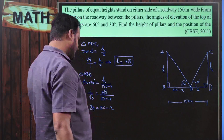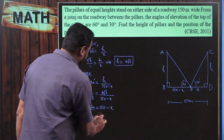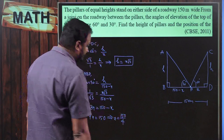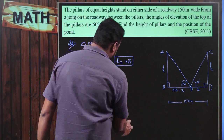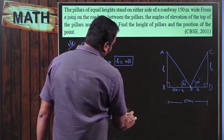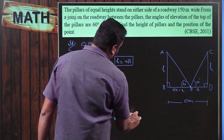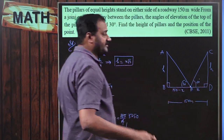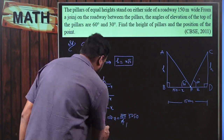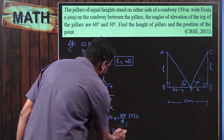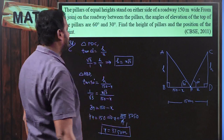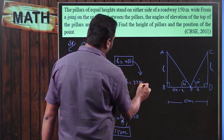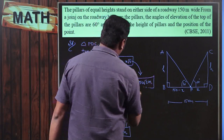Transposing: 4x = 150, so x = 150/4 = 37.5 meters. The other part is 150 − 37.5 = 112.5 meters. To find h: h = x√3 = 37.5√3 meters. This is the height of the equal pillars.